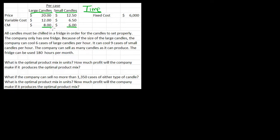Well, let's see what our constraint is in this problem. It says all candles must be chilled in a fridge. So we have this fridge here. In order for the candles to set properly. The company only has one fridge. That sounds like a constraint.